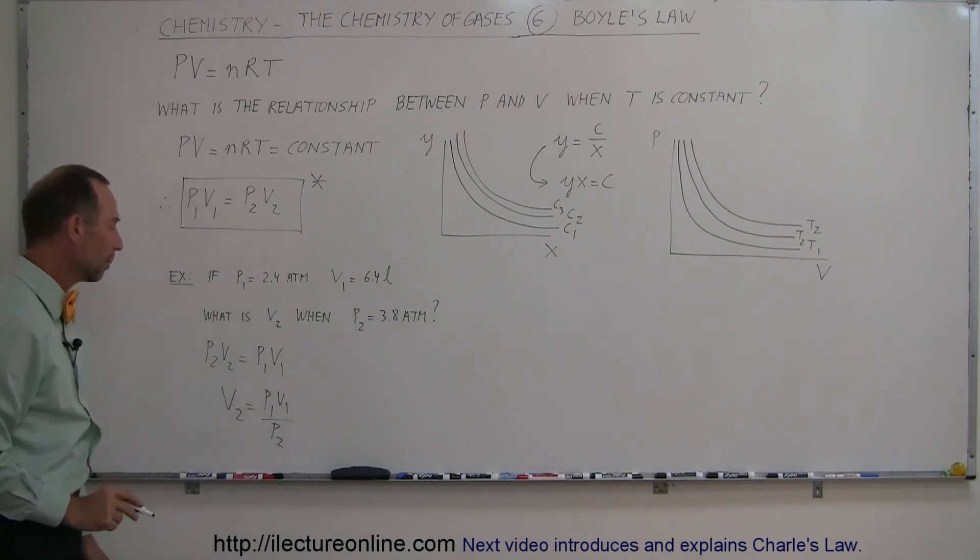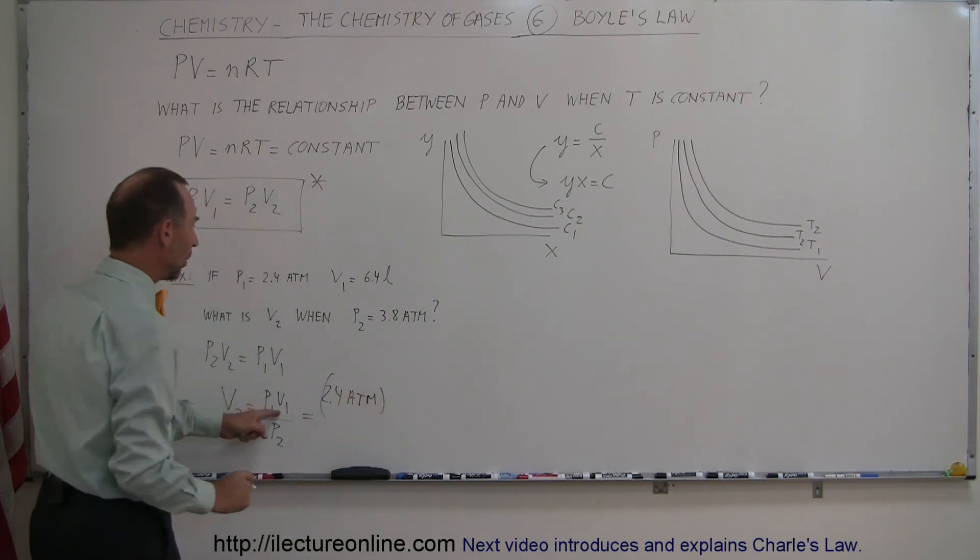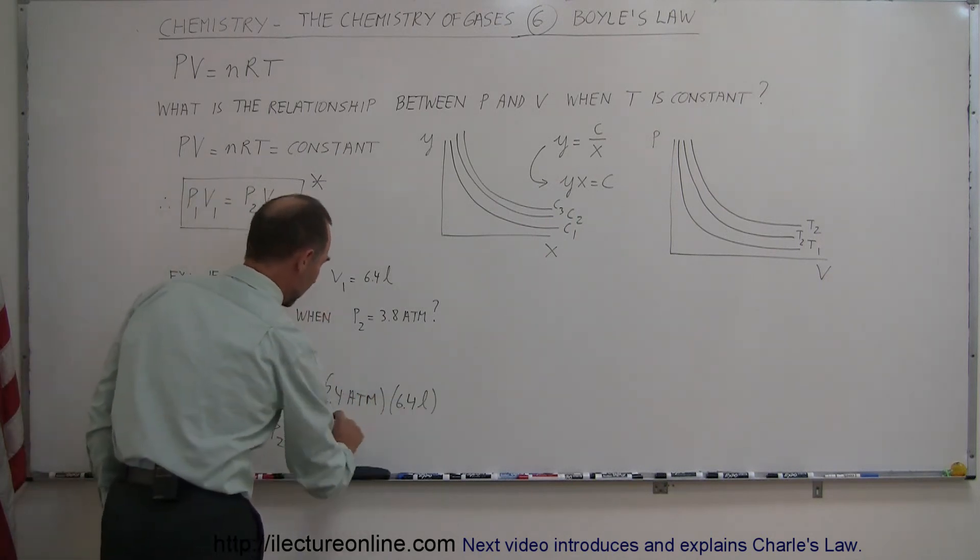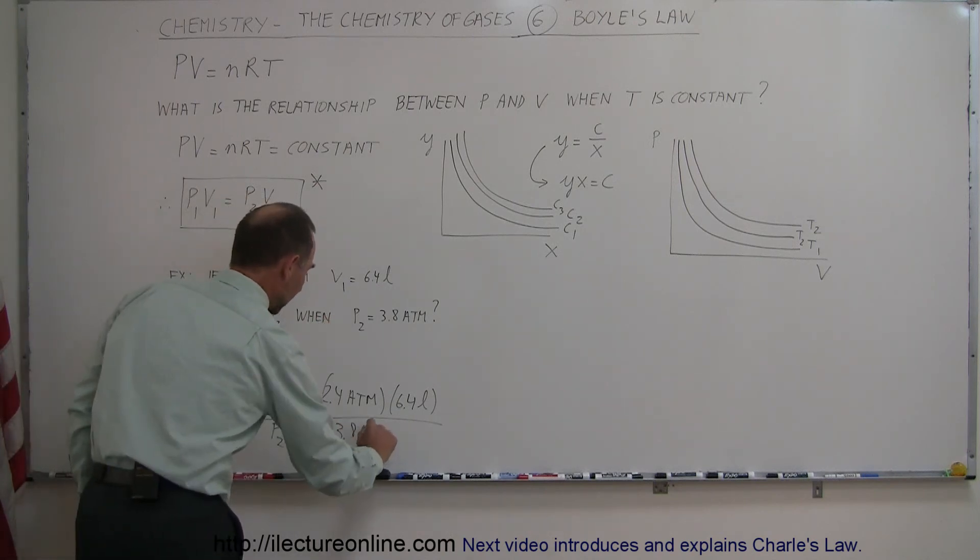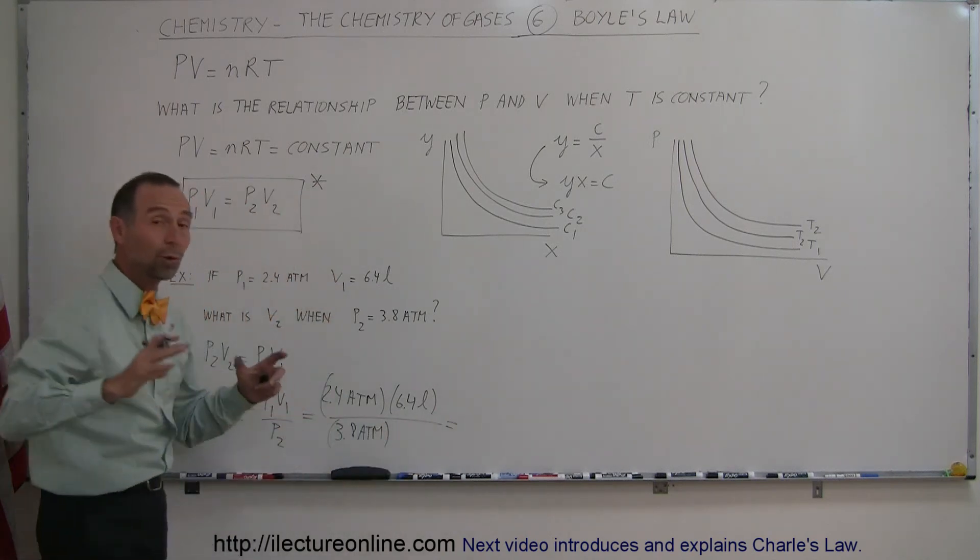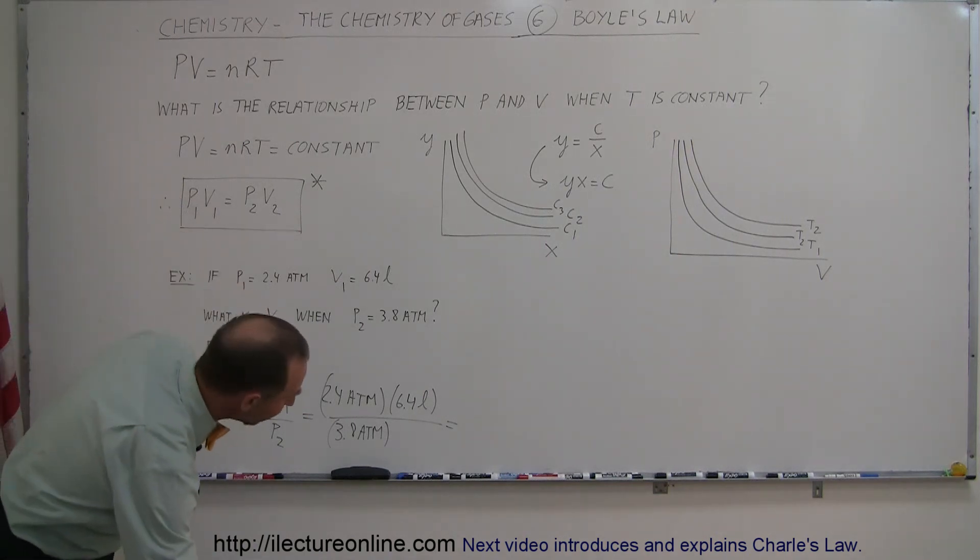And then all we have to do is put in there those three numbers. So P1 was 2.4 atmospheres. V1 was 6.4 liters. P2 is 3.8 atmospheres. And of course, logic would dictate that if we put more pressure on the gas that the volume would therefore decrease. So let's find out.